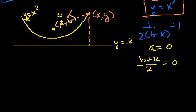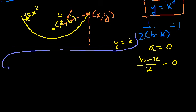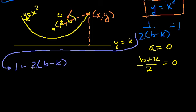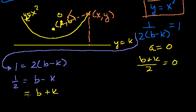So if we know that 1 over (2b minus k) equals 1, we multiply both sides by (2b minus k) to get 1 equals 2(b minus k), then divide by 2 to get 1/2 equals b minus k. And from the condition b plus k over 2 equals 0, the numerator b plus k must equal 0.